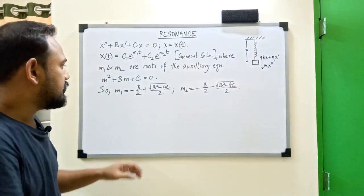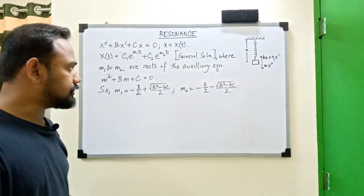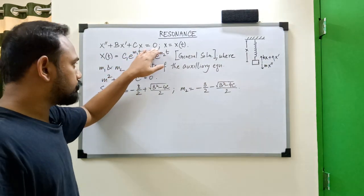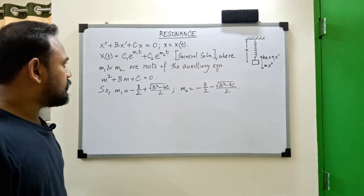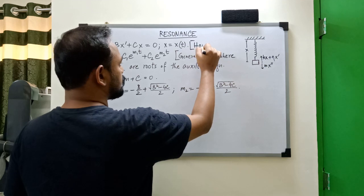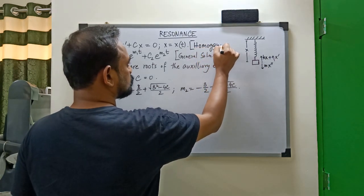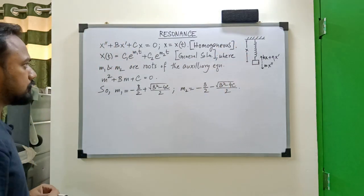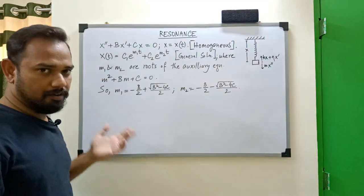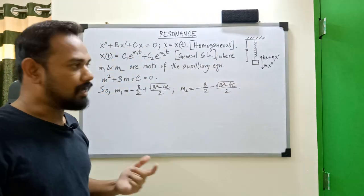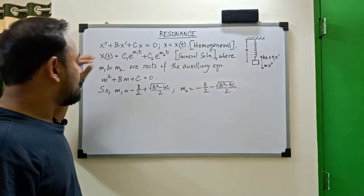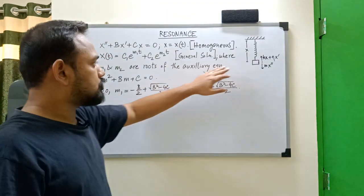Welcome back. In this video we will learn about the case of resonance for a second-order linear ordinary differential equation with zero input, or the external force being zero — which in mathematical terms is called a homogeneous second-order linear differential equation. Here x is a function of time, x double prime is the second derivative of x with respect to time, and x prime is the first derivative. The constants b and c are just constants.